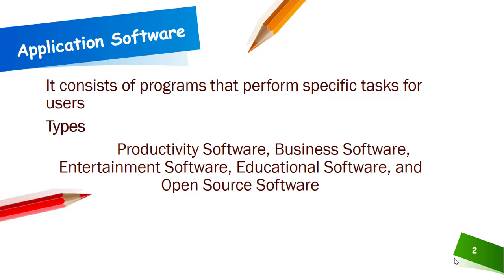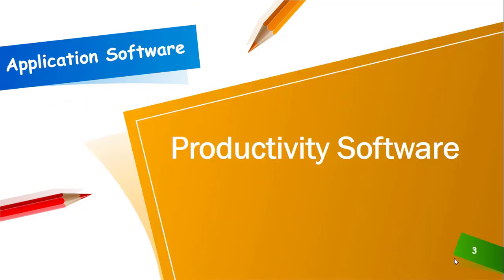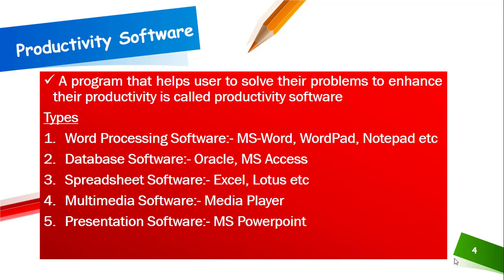Let's discuss each type in detail. The first one is productivity software — these are programs that help a user solve problems and enhance their productivity. We have a few types, such as word processing softwares in the form of MS Word, WordPad, and Notepad. These are all softwares we are quite familiar with.